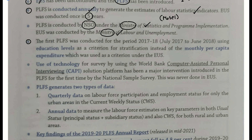2015-16 tak jab Employment and Unemployment Survey aaya, uske aankde nikle, uske ek saal ke andar andar sarkar ne usse discontinue kar diya. Aur PLFS — Periodic Labor Force Survey — jab sarkar lekar aati hai, toh isko conduct karwana shuru kiya gaya is survey ko 2017-18 se. Precise tarike se baat karein toh June 2018 se. Yahan par criteria use kiya gaya as educational levels also.